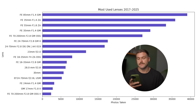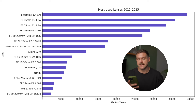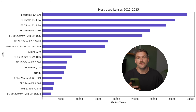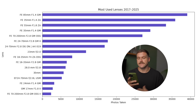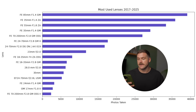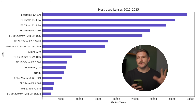The Sony 55mm f1.8 ZA was also a great Zeiss lens I used. More recently I've been using the 35mm f1.4 G Master. There's also some 70-200 and 24-70 in there, along with various other lenses I've shot with over the years.